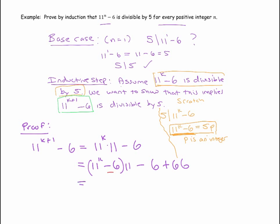And the reason I did that is because 11 to the k minus 6, if you go over to the scratch work there, that can be written as 5 times p, and minus 6 plus 66 is plus 60. And I'm just going to indicate where p is some integer. And again, I can use that fact because I'm assuming that 11 to the k minus 6 is divisible by 5. And by the definition of divisibility, that's what it means.